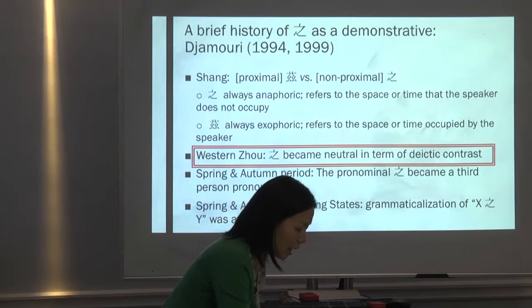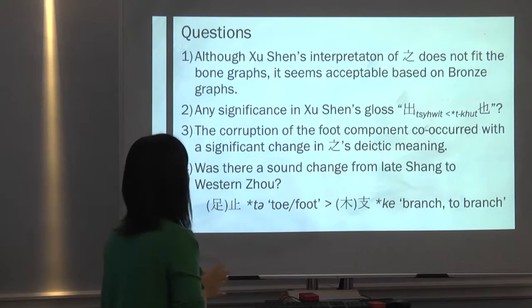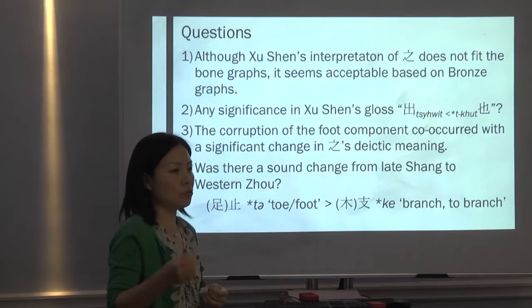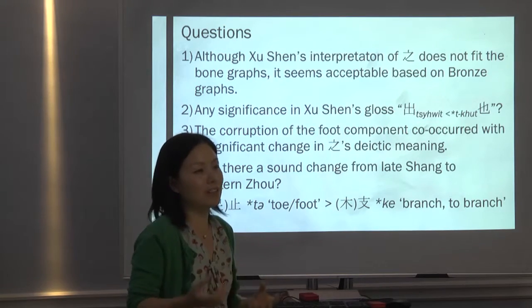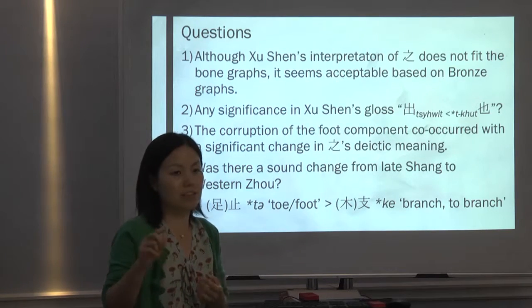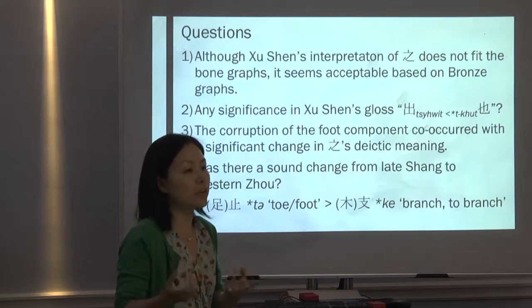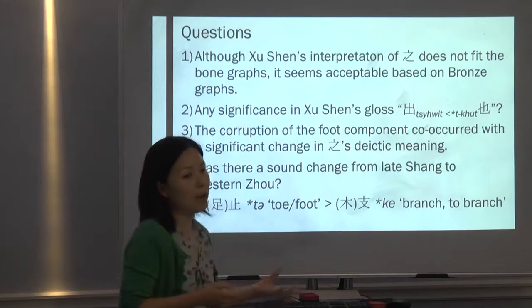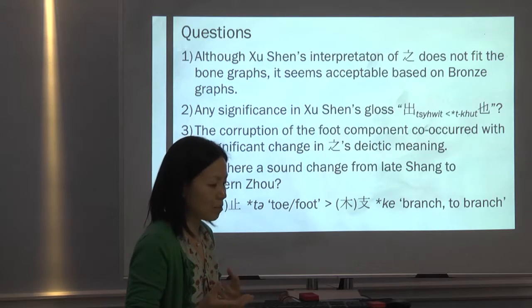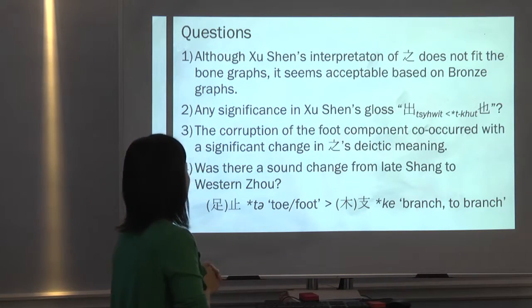So I have these questions regarding what I said. Although Xu Shen's interpretation of zhi does not fit the bone graphs, it seems acceptable based on the bronze graphs. Xu Shen used the word chu, and when reading the new Old Chinese reconstruction, what instantly stood out for me is that chu has this T pre-initial plus K structure, and it's used to gloss zhi — zhi is chu ye. So is there any significance in this gloss? For the phonetic part we can tell it doesn't match zhi, but why was chu deliberately chosen to gloss zhi?